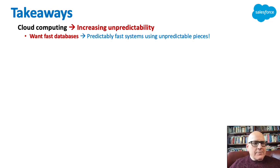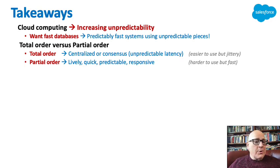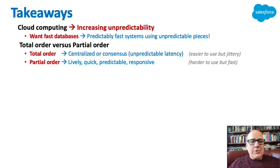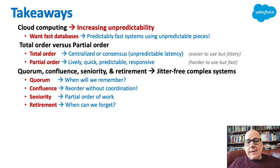So what are the takeaways? Cloud computing has increasing unpredictability in its timeliness, and we want fast databases. How can we do predictably fast systems with unpredictable pieces? Total order is centralized or consensus-based and has unpredictable latency — easier to use, but jittery. Partial order is lively, quick, predictable, and responsive — harder to use, but fast. Quorum, Confluence, Seniority, and Retirement give you jitter-free complex systems. Quorum tells you when you will remember. Confluence allows you to reorder without coordination. Seniority gives you a partial order of the work. Retirement tells you when you can forget about old work.